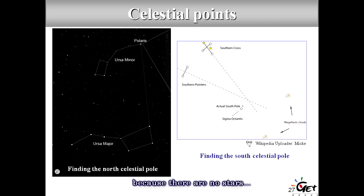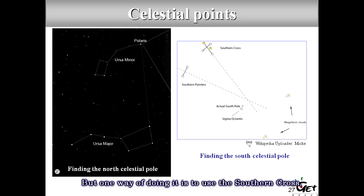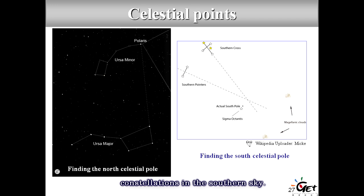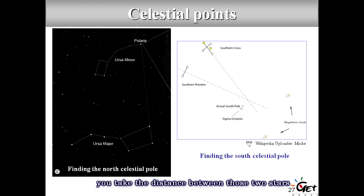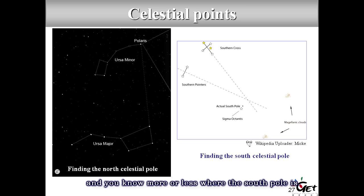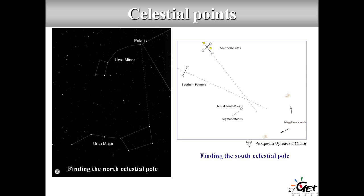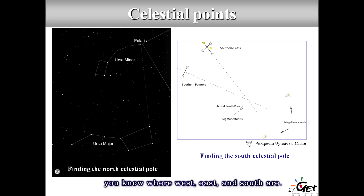The trick is to use the distance between two stars in the Big Dipper — multiply it five times — and you spot Polaris in Ursa Minor. That gives you the Northern Celestial Pole. For the Southern Hemisphere it's a bit more complicated because there's no bright star exactly at the South Pole. One way is to use the Southern Cross: take the distance between two of its stars, multiply it six times, and you find approximately where the South Pole is.